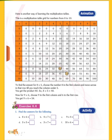Let's see what is it. This is a multiplication table grid for numbers from 0 to 10. See here we have the numbers. This is the multiplication symbol. Here we have the numbers 0 to 10 in first row and here in the column 0 to 10, right?